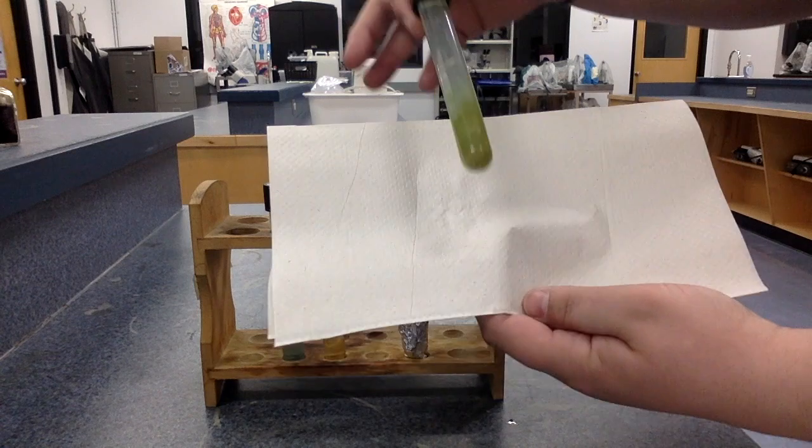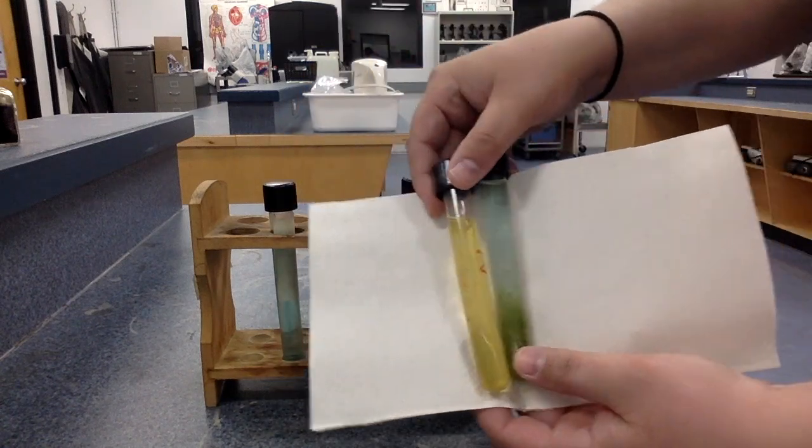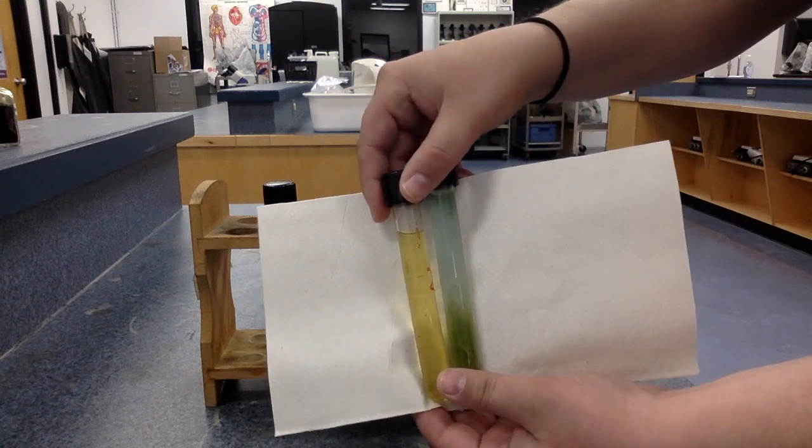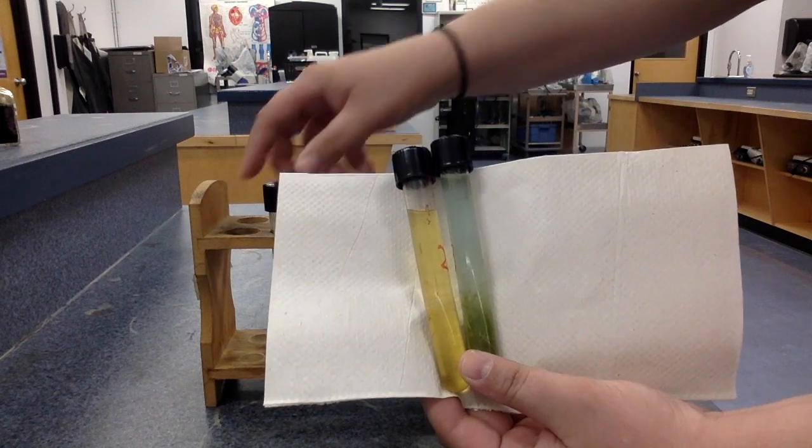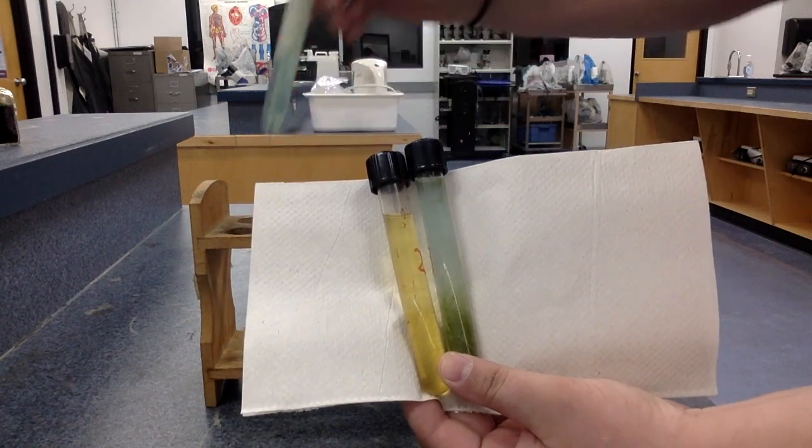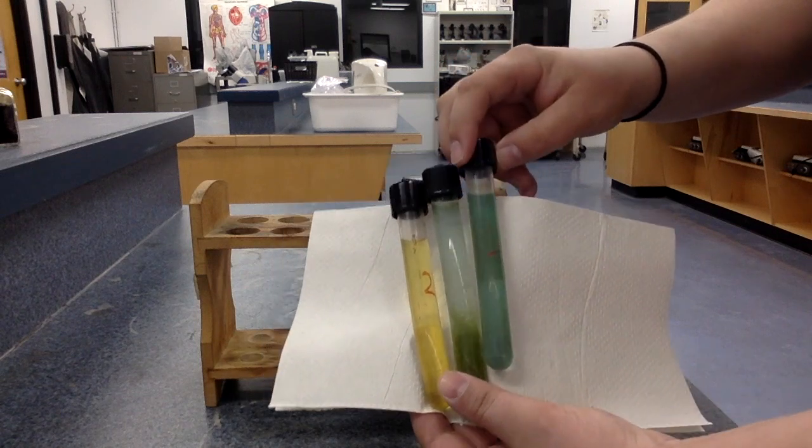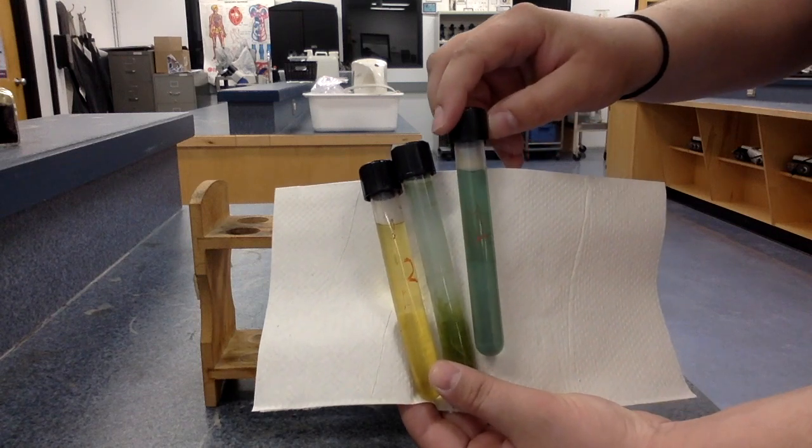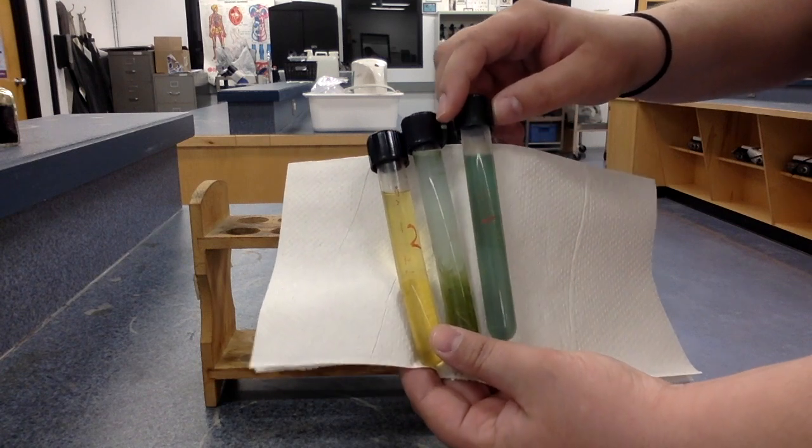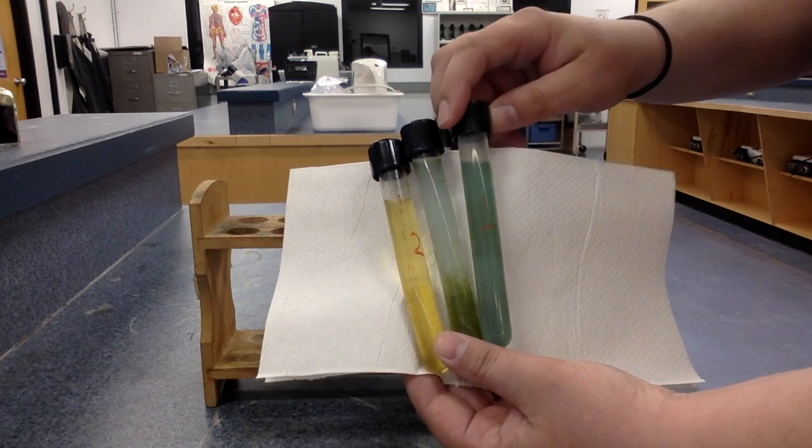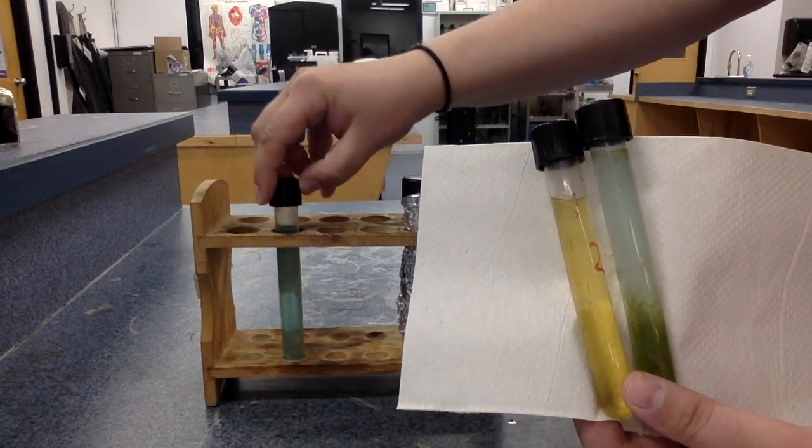Test tube three - remember it was yellow, it was like test tube two when we started, and I think even though maybe it's not like 100% green, it's certainly more green than when it started. Maybe a little bit lighter than what we saw in test tube one. There's the three of them side by side for you, but it's still definitely not the yellow color that it was to begin with.